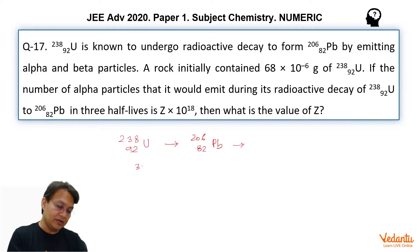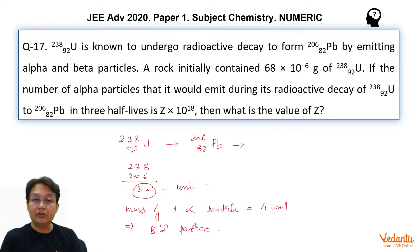As you can see, 238 minus 206, that is, the difference in mass is equal to 32, that means 32 units. Now, the mass of one alpha particle is equal to 4 units. So this gives us 8 alpha particles, which means that 238-92 uranium will emit 8 alpha particles while it is converting to 206-82 lead. We got this information.